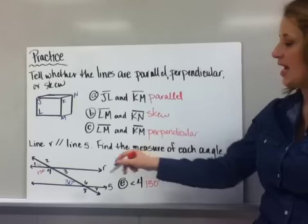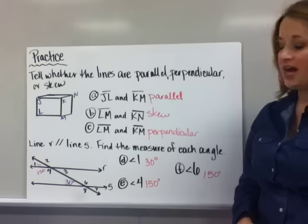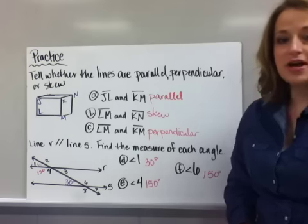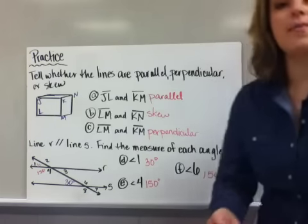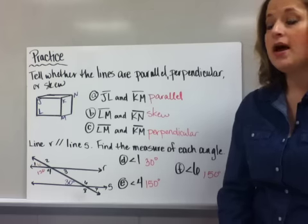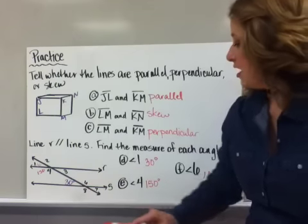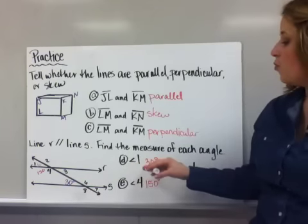Then on the second half, line R is parallel to line S. Find the measure of each angle. These are like puzzles that you're trying to figure out and you're using what you know about parallel lines cut by a transversal and what you know about supplementary angles.